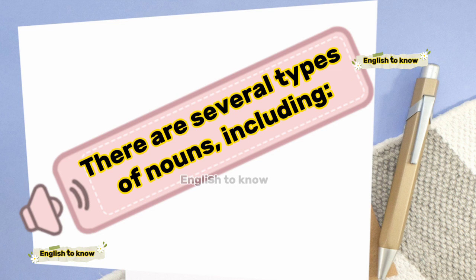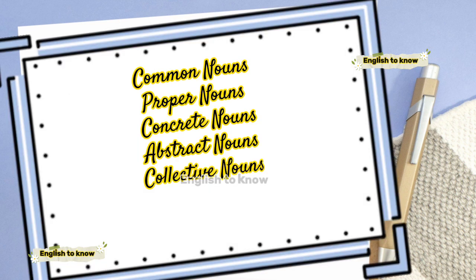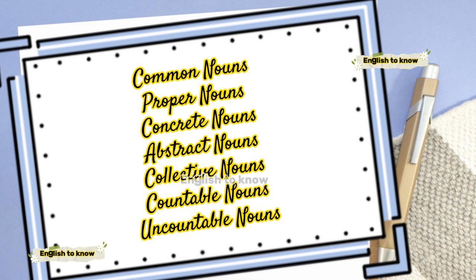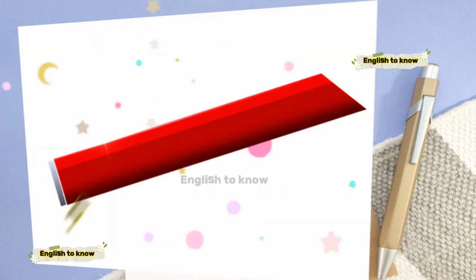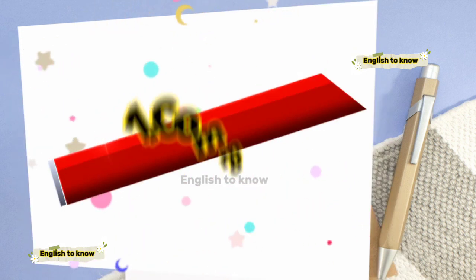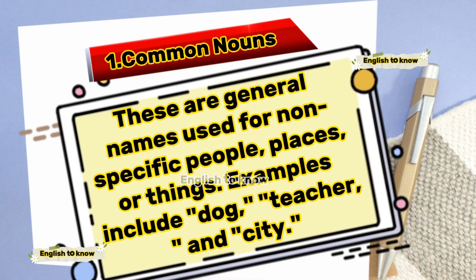There are several types of nouns including common nouns, proper nouns, concrete nouns, abstract nouns, collective nouns, countable nouns, and uncountable nouns. Common nouns are general names used for non-specific people, places or things.